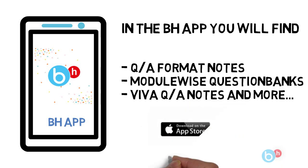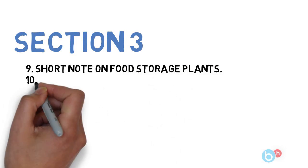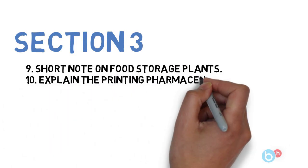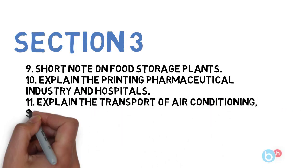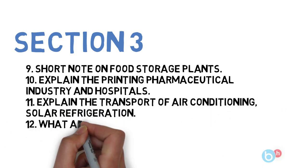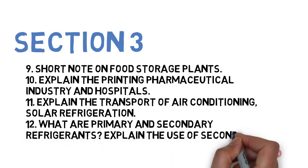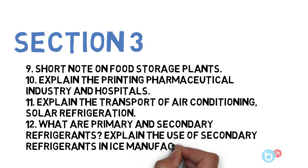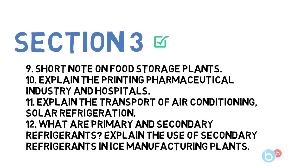Talking about section 3, here you have again 4 questions. First is: short note on food storage plants. Next is: explain the printing pharmaceutical industry and hospitals. Next is: explain the transport of air conditioning and solar refrigerations. And the last one is: what are the primary and secondary refrigerants and explain the use of secondary refrigerants in ice manufacturing plants.